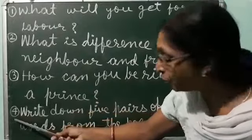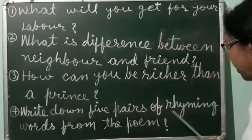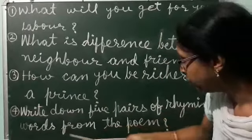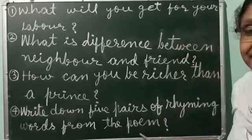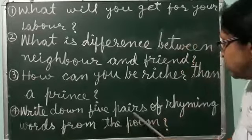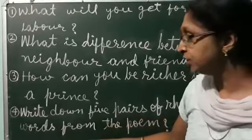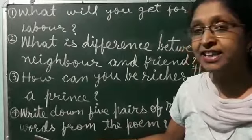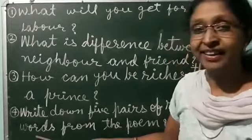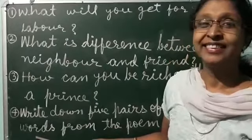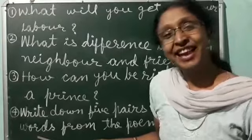Question number four: Write down five pairs of rhyming words from the poem. Kavita se paanch jode samaan tuk wale shabd — rhyming shabd chun kar likhein, jaise neighbor, labor. Aisa easy hai, aap easily bana sakte hain. Thank you.